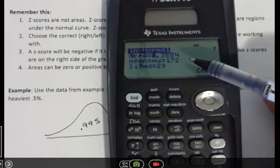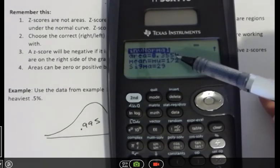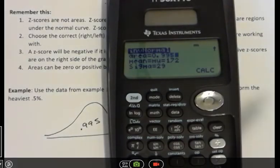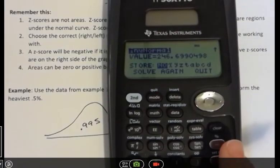Notice that it's got my data in there from before. I didn't clear it. It's got 172 pounds for the mean and 29 pounds for the sigma. And all I have to do is enter the area 0.995 and then scroll through that. And it's going to tell me my value.